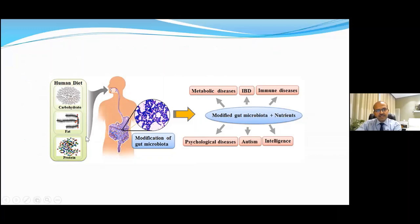To summarize: the human diet — carbohydrates as the prebiotic component, lactose, fructooligosaccharides, galactooligosaccharides, fat and protein — interacts with the gut microbiota, which may itself be modified by various factors. This interaction can lead to various effects, both positive and negative, depending on the nature of the change.